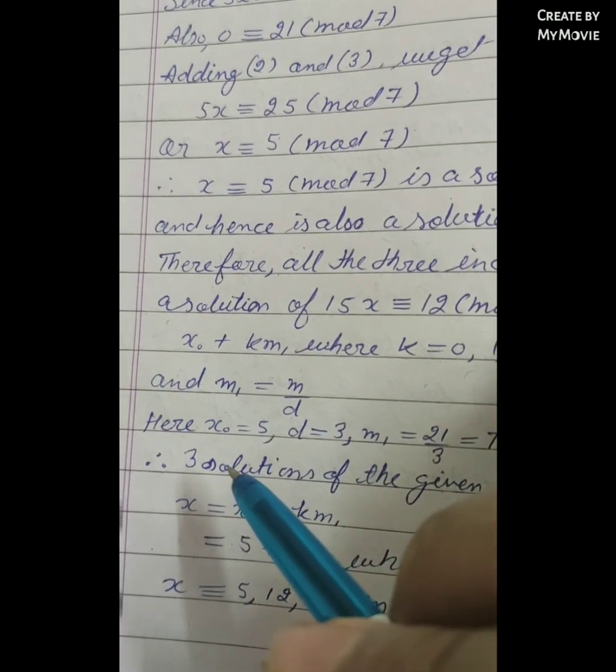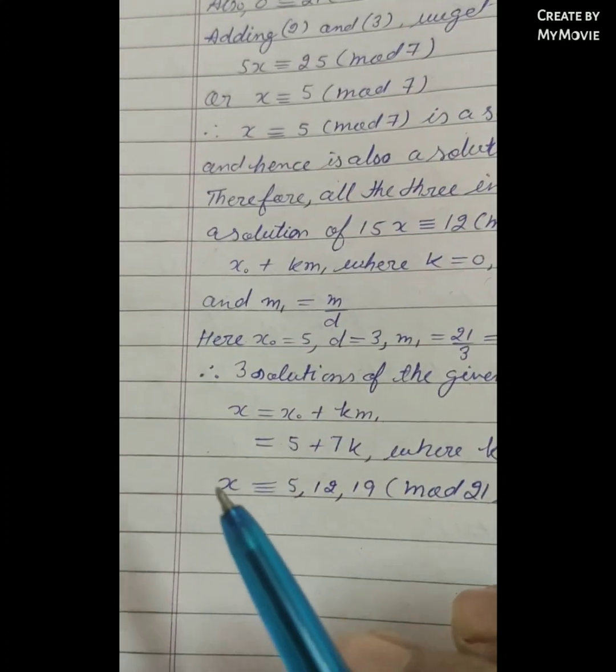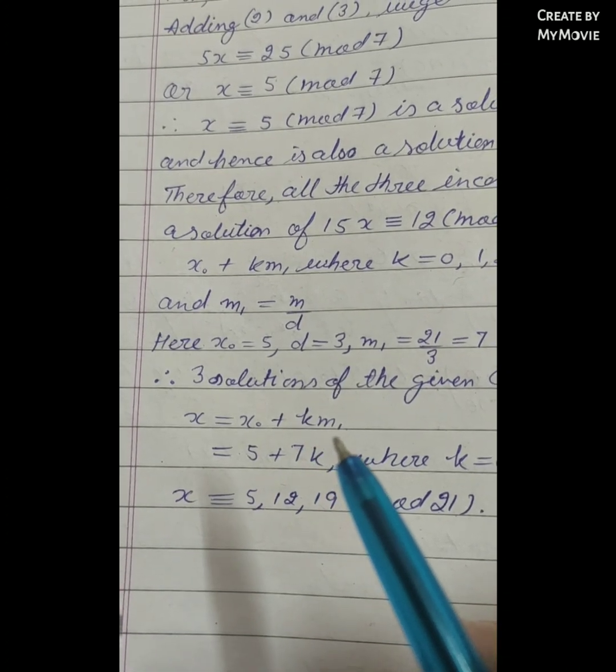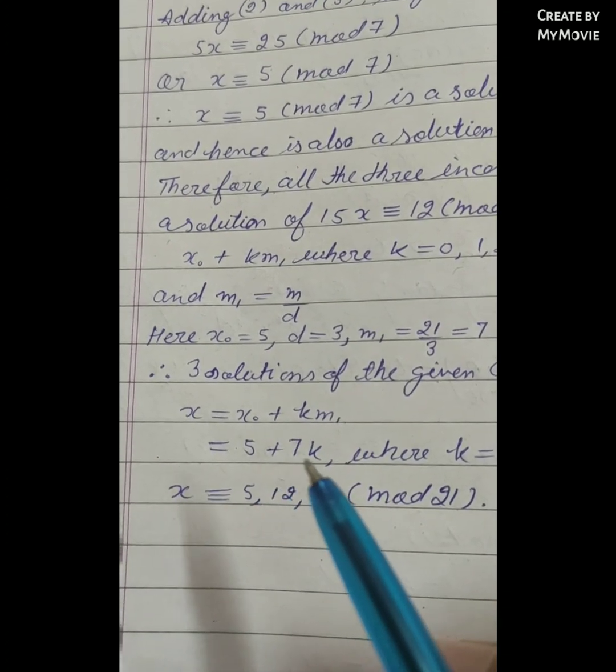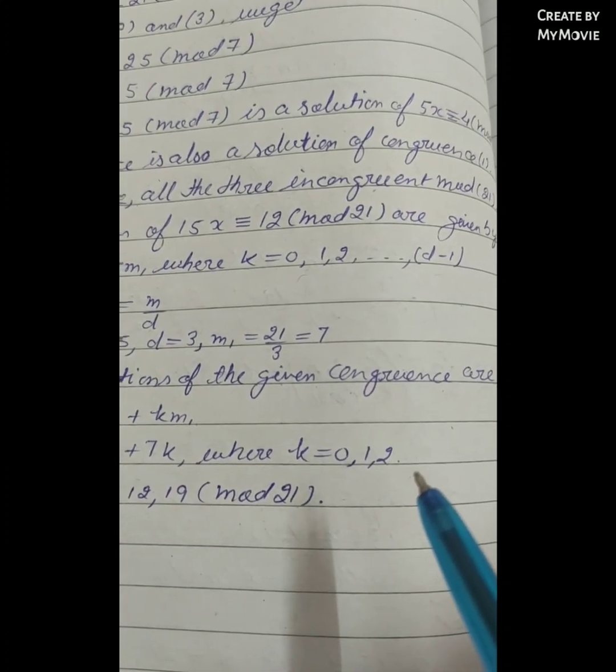So 3 solutions of the given congruence are x = x₀ + km₁ = 5 + 7k where k = 0, 1, and 2.